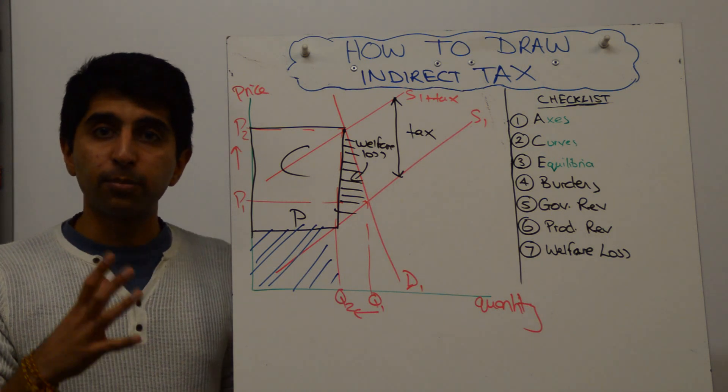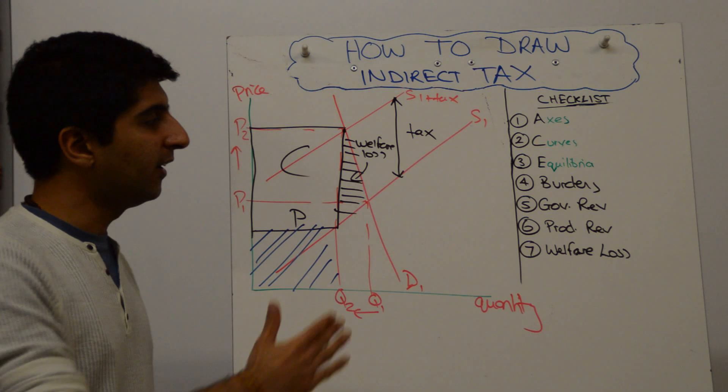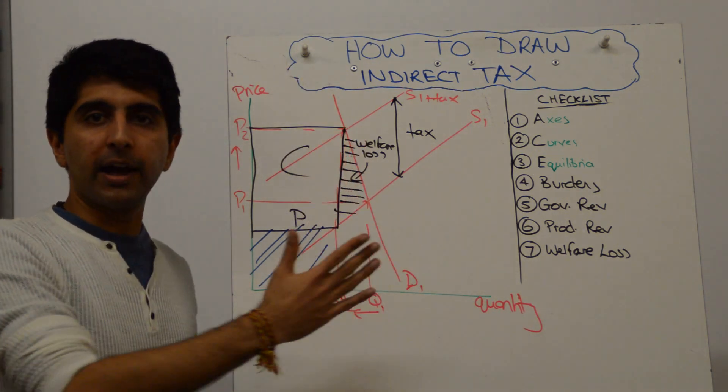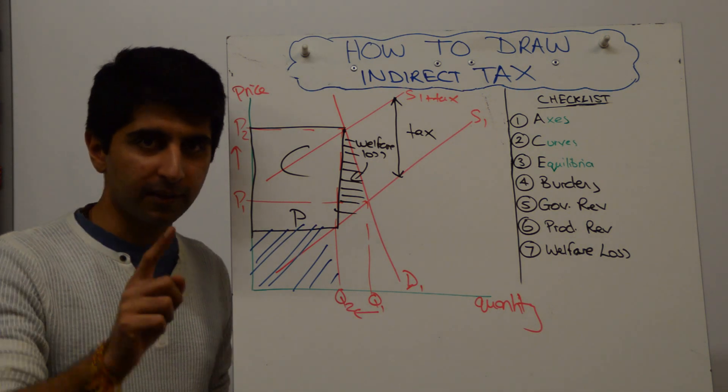Let's now finish off by showing when there is price-elastic demand. In fact, on this one, guys, if there was perfectly inelastic demand, just make the demand go vertical and follow the exact same technique. Demand is now price-elastic. What happens? Let's have a look.